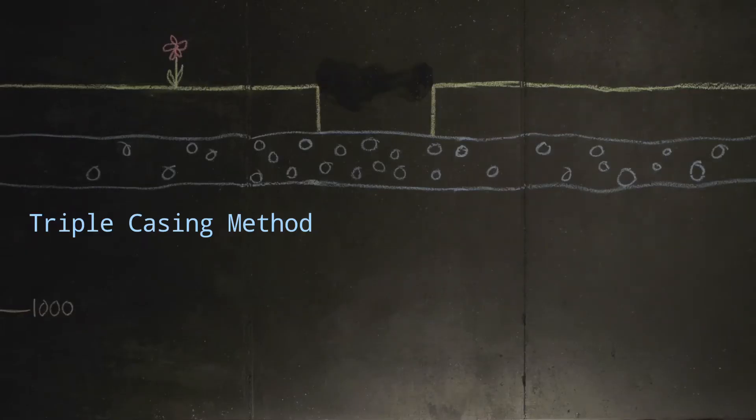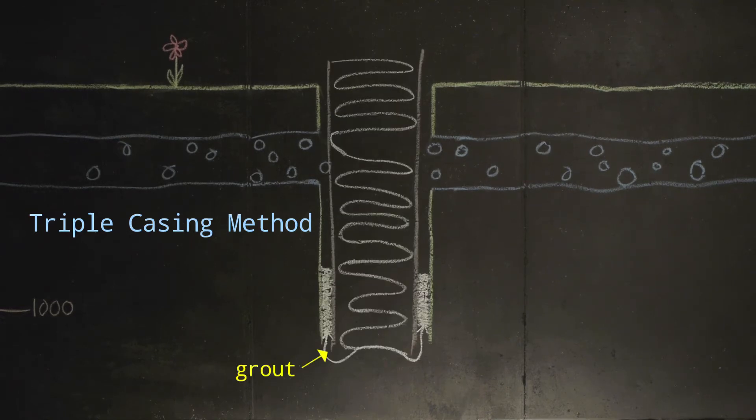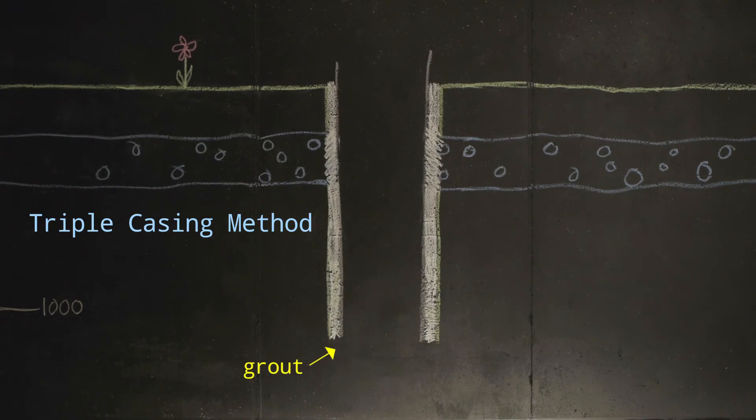Steel casing is used to create multiple layers of protection for the groundwater aquifer and cement grouting is squeezed between the casing and what's called the annulus.